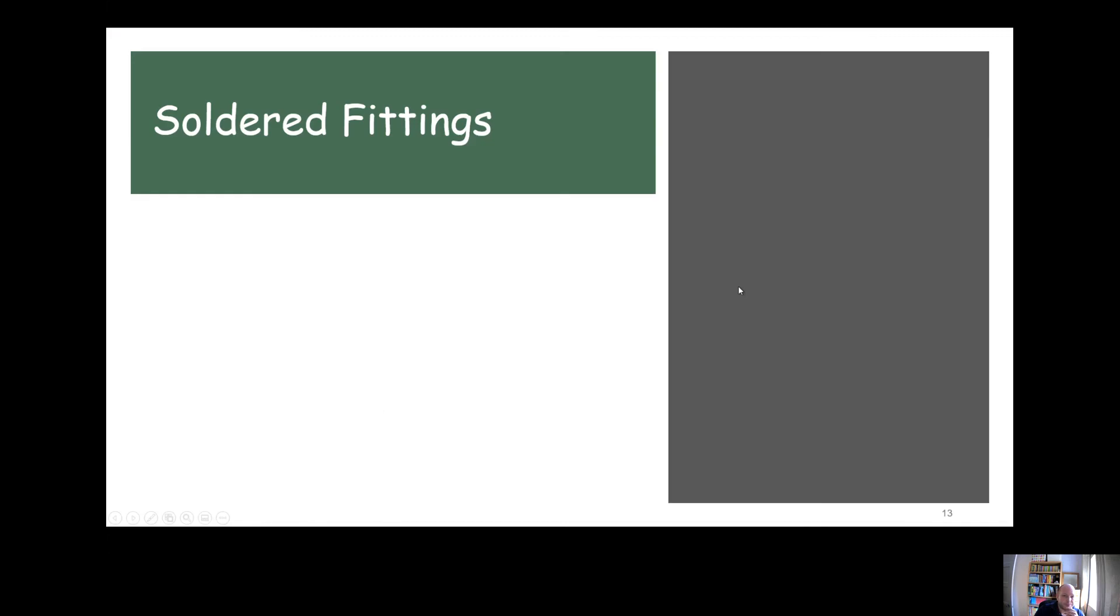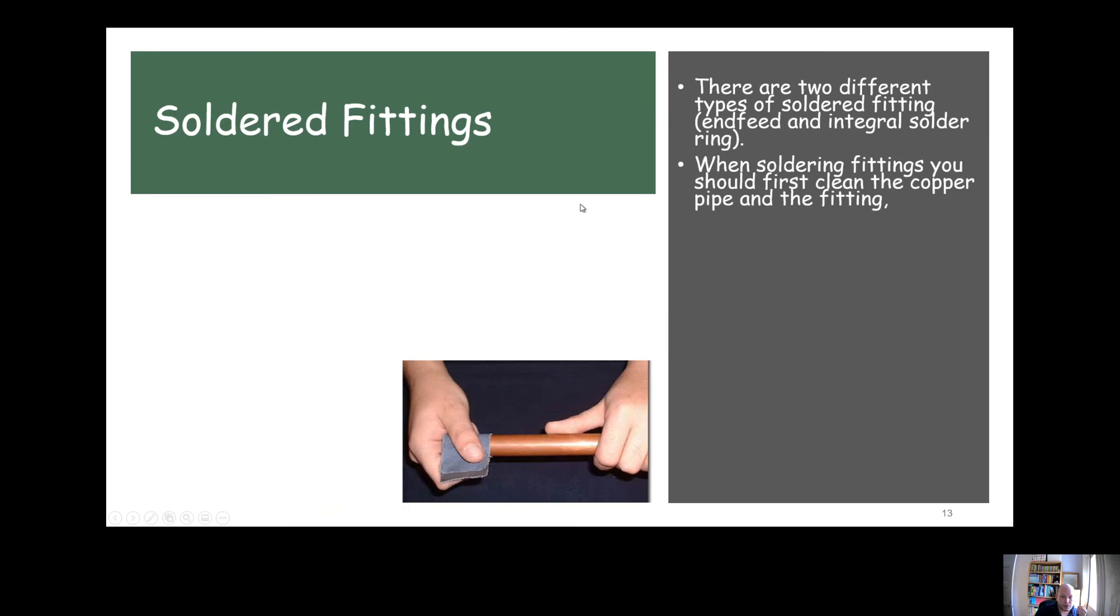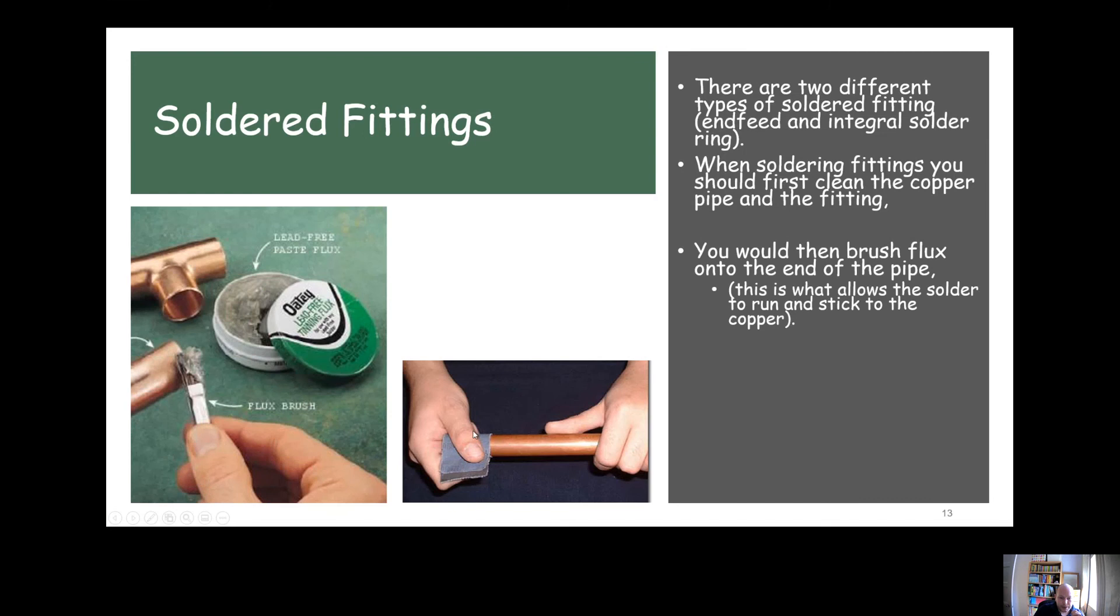For soldered fittings, there's two types: end feed fittings and integral solder ring fittings. The jointing process is almost exactly the same for both. When you solder fittings, you firstly clean up the pipe with an abrasive cloth or piece of steel wool. You should also clean the inside of the fitting, and then put some flux onto the end of the pipe only. Don't put it into the fitting, because if you push the flux inside the fitting, you end up with a buildup of flux inside. Just put the flux on the clean end of the pipe and then push that into the clean fitting.